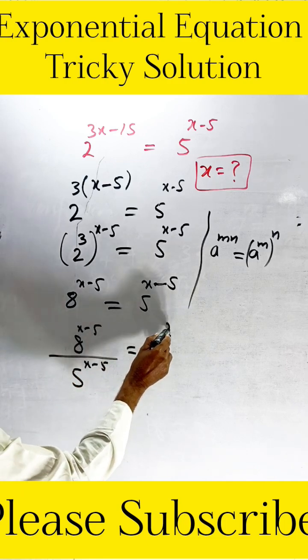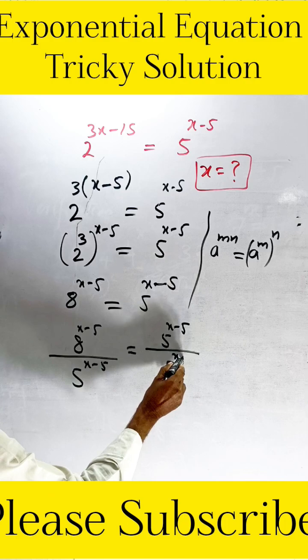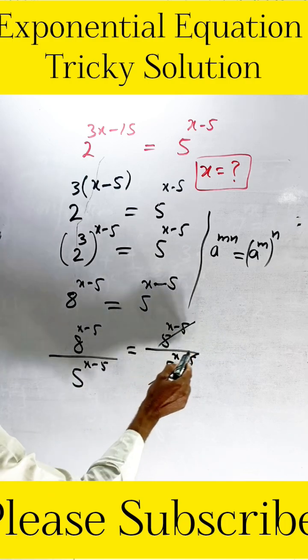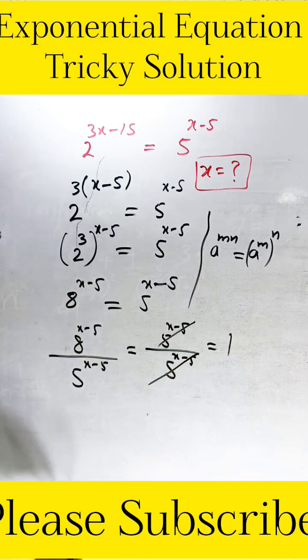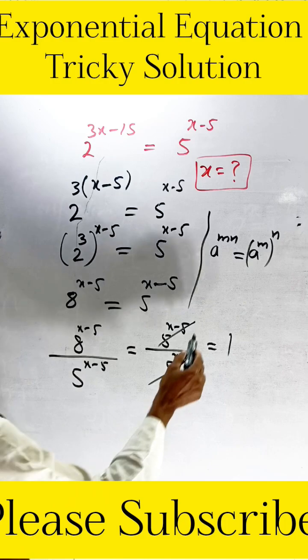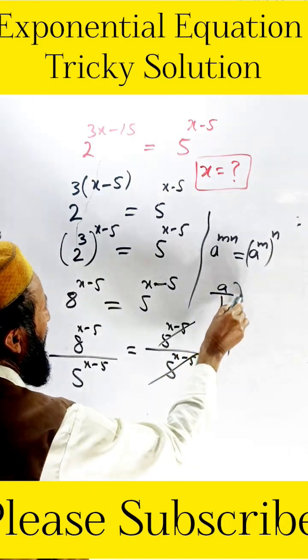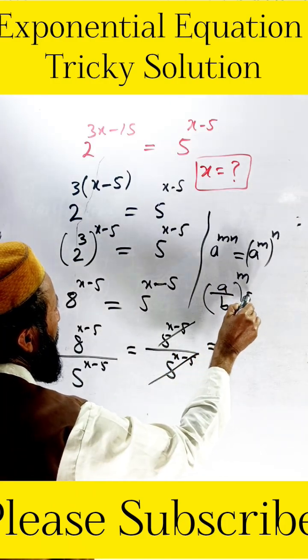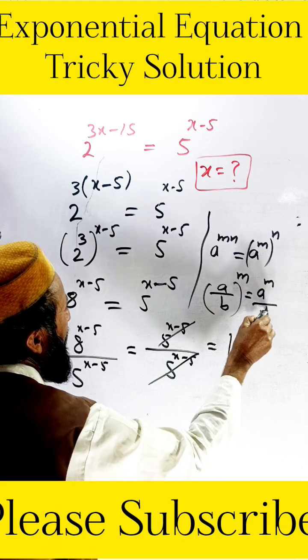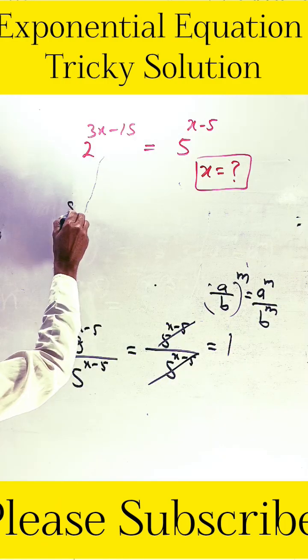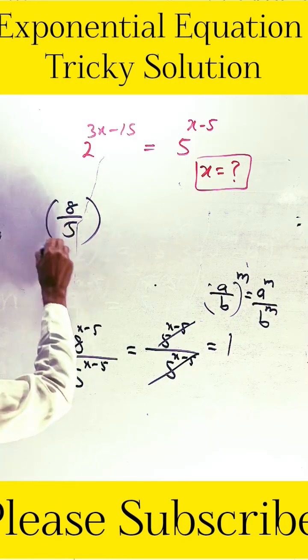So we can divide 8^(x-5) and 5^(x-5), both are cancelled. This one we get 1, and here the powers are the same. According to this formula, a divided by b exponent, so we can write a^m and b^m according to 8 divided by 5 whole exponent of x minus 5 is equal to 1.